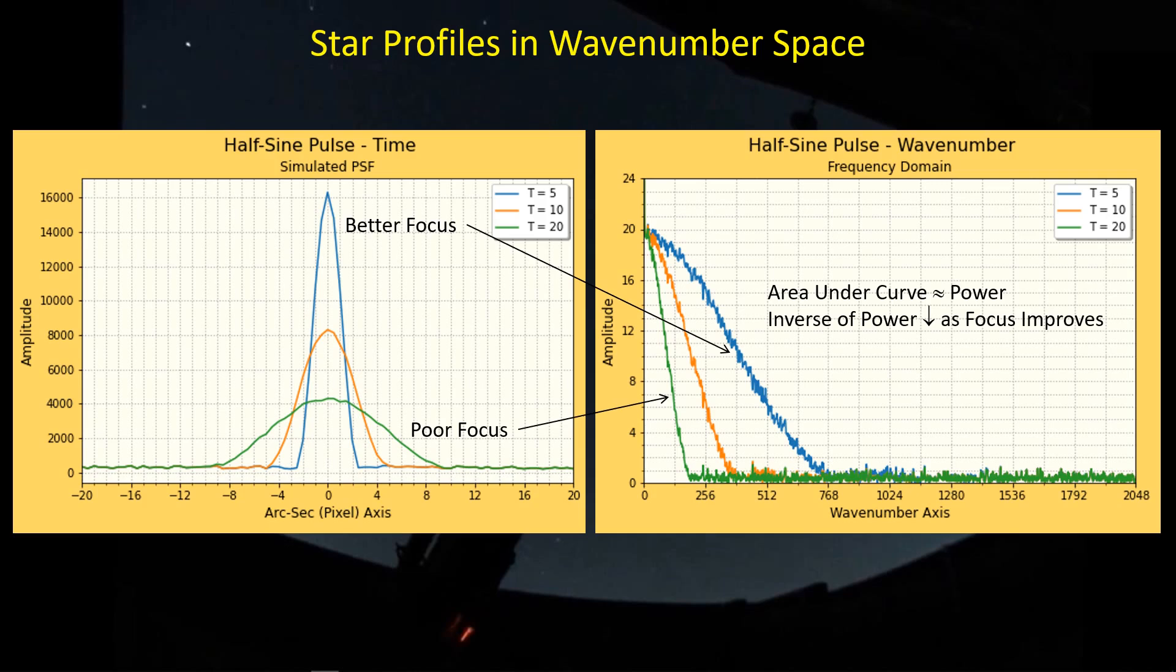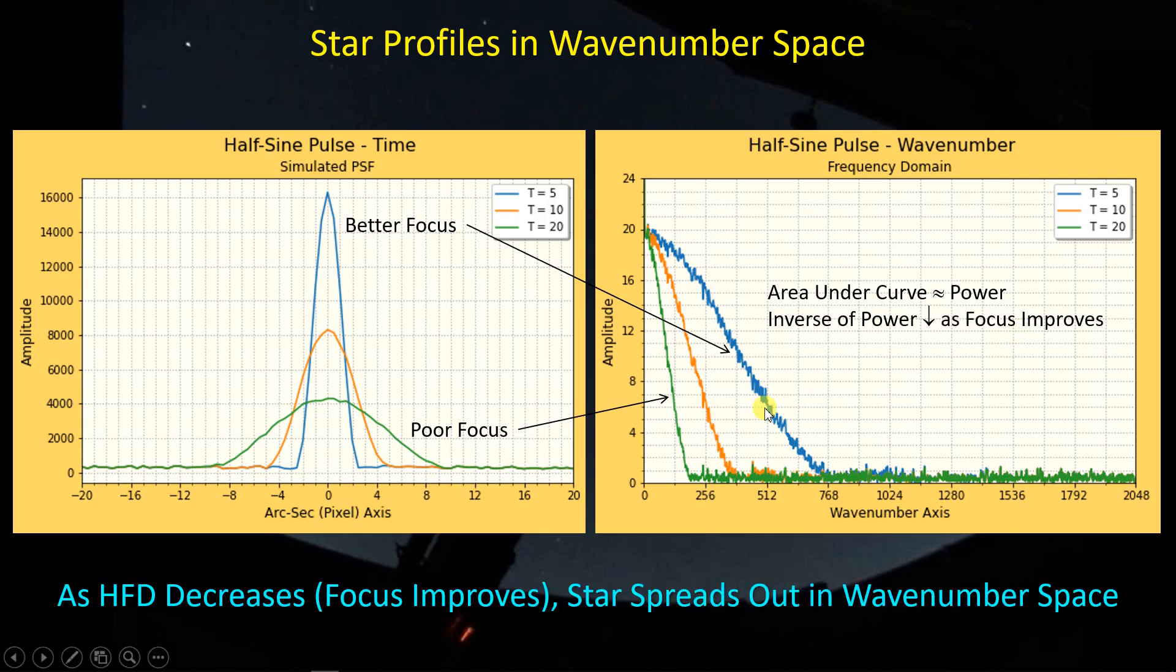And we've talked about this before, but there is a theoretical limit to the width of the half-flux diameter of a star based on the f number of your scope and the wavelength of light that you're imaging with. What I think the folks at APT are doing, they're taking the area under this curve, which is kind of proportional to the power in the image, the image power, and then they're taking the inverse of the power. So now, as the inverse of the power goes down, focus is improving. And so that kind of correlates to as the half-flux diameter decreases, focus improves. In other words, the star spreads out in wave number space. And that's sort of the basic idea behind this new method.